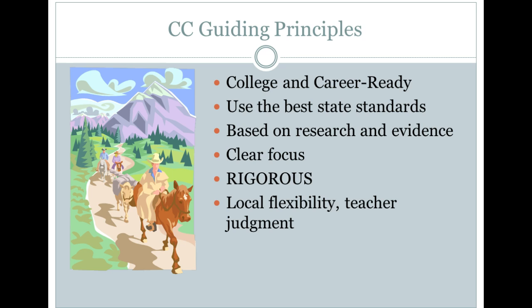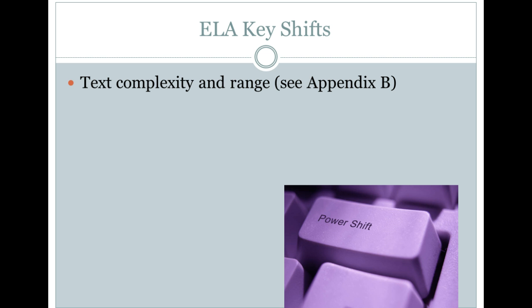The key shifts with the standards include text complexity and range — we want to prepare students to read more complex text because they need to be prepared to read increasingly more informational passages. The Common Core standards have important appendices; Appendix B has exemplar texts suggesting appropriate texts for each grade level. These are not a mandated book list, but samples of what would be appropriate. We want to remember to expose students to more informational passages.